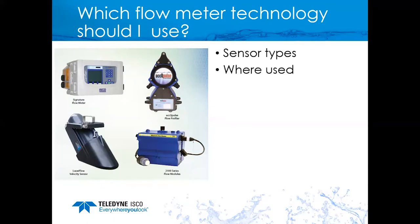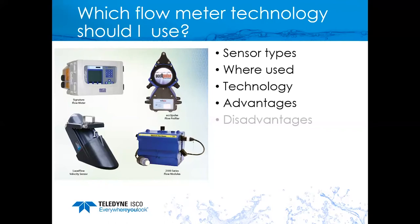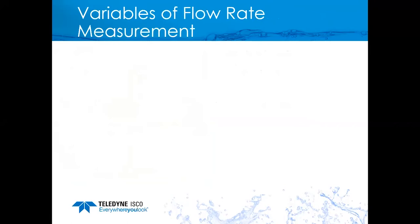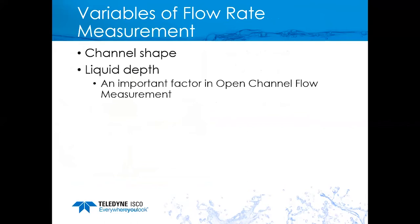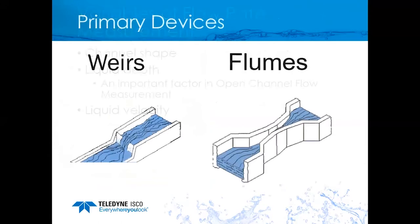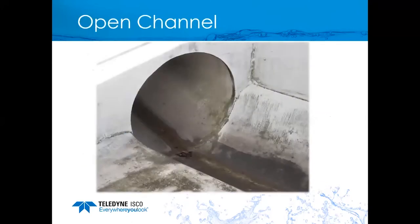Today we're going to discuss which technology should I use for open channel flow monitoring. I'll cover sensor types, where they're used, the different types of technology for the sensors, and the advantages and disadvantages of each. There are some variables to consider when monitoring flow: the channel shape, the liquid depth — an important factor used for area calculations and level-to-flow calculations in primary devices — and the liquid velocity.